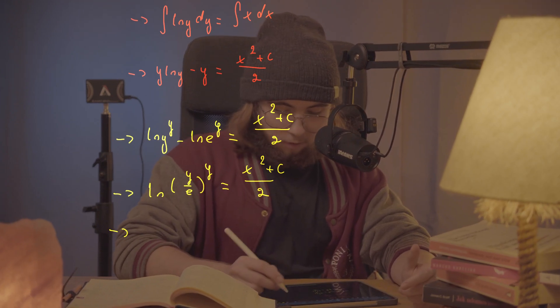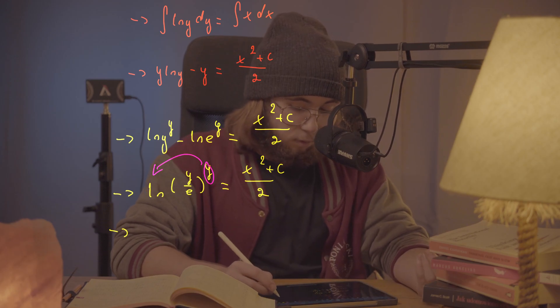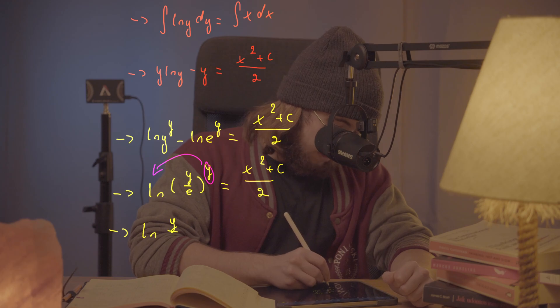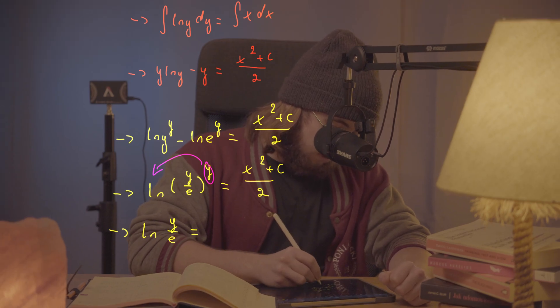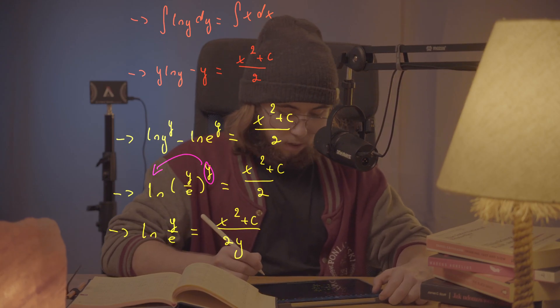Awesome. But now I can just take this y in front of the natural log and then divide both sides by it. I'm going to get the natural log of y/e equal to (x squared plus c) all over double y. I've already divided everything through by that y.